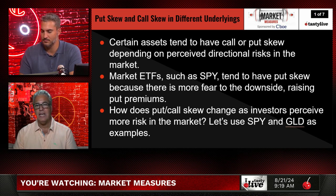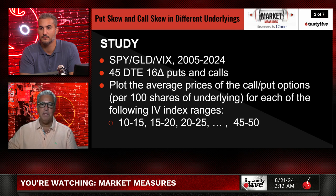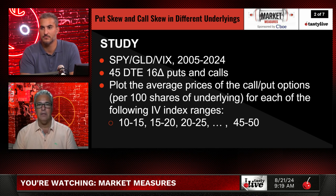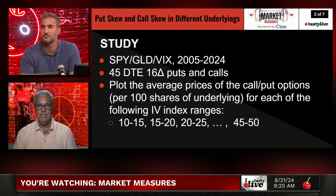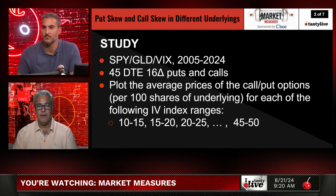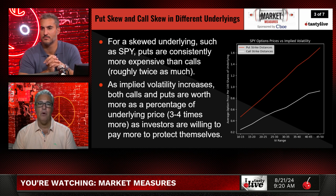How does put/call skew change as investors perceive more risk? Let's use SPY and gold as examples — two extreme cases. Study: SPY vs. GLD BIX, 2005 to 2024, 45-day 16-delta puts and calls — a classic standard deviation strangle. They're plotting the average prices of the call and put options per 100 shares of the underlying across IV index ranges: 10–15, 15–20 (where we are now), 20–25, and so on up to 45–50. Put strike distances are in red; call strike distances from at-the-money are in white.